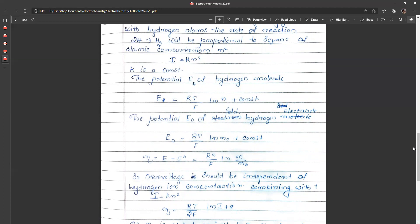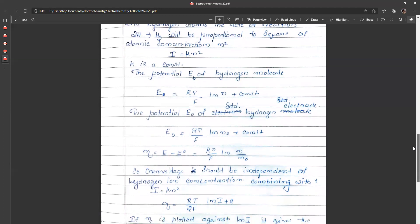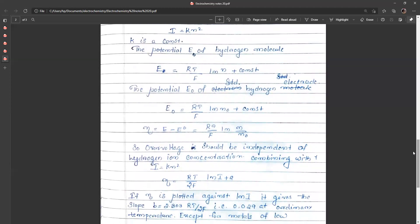It depends only on the ratio n by n0. Combining this with the equation i equals k n squared, eta is equal to RT by 2F log i plus a constant.